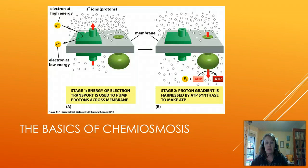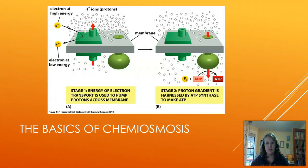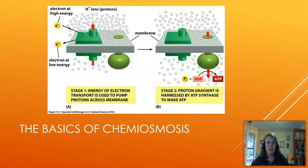Before we get too in-depth on everything else, let's review chemiosmosis. Chemiosmosis is the process of moving protons across the membrane. This is a simplified version of the electron transport chain and ATP synthase. What happens is we harness electrons to force protons from an area of low concentration to an area of high concentration. As we've discussed regarding energy, this is not something they want to do on their own, so they must harness the energy in these high-energy electrons to pump that across.